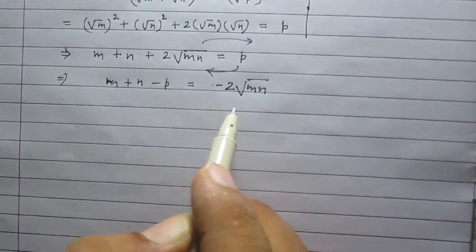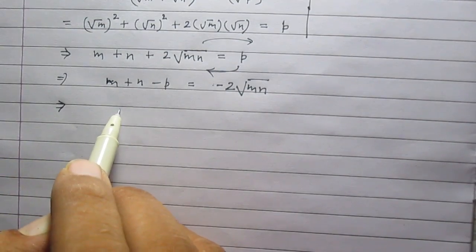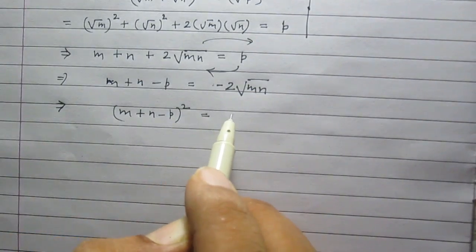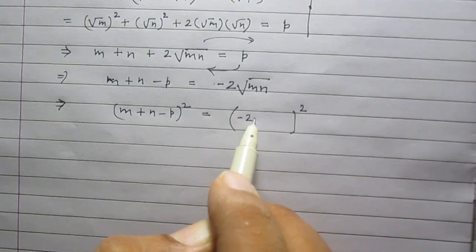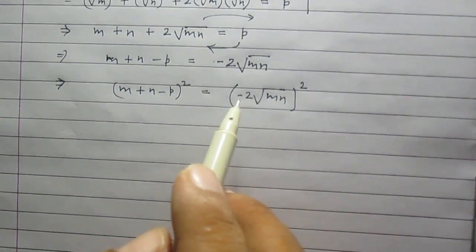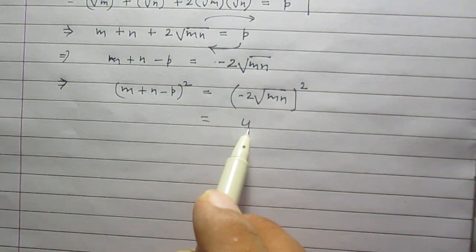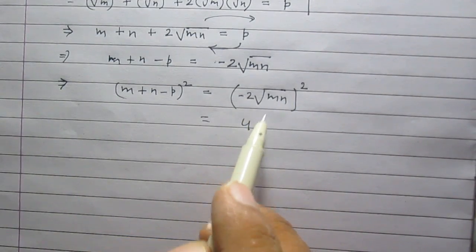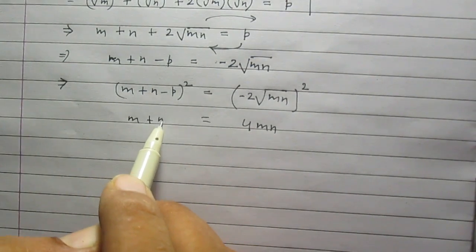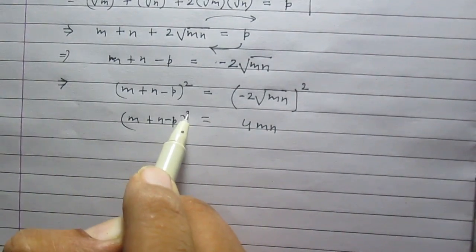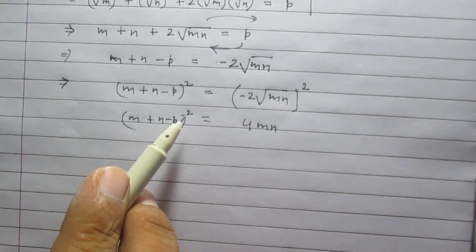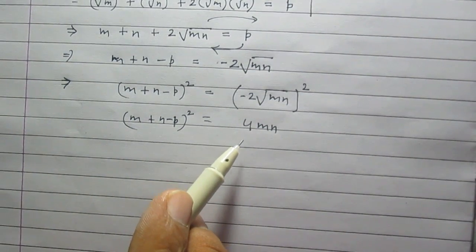Now once again we can square both sides. After squaring both sides we will get m plus n minus p whole square is equal to square of minus 2 multiplied by square root of mn. Square of minus 2 is 4 and square of square root of a number is the number itself. So it is 4 times mn. Thus we have proved that m plus n minus p whole square is equal to 4mn.